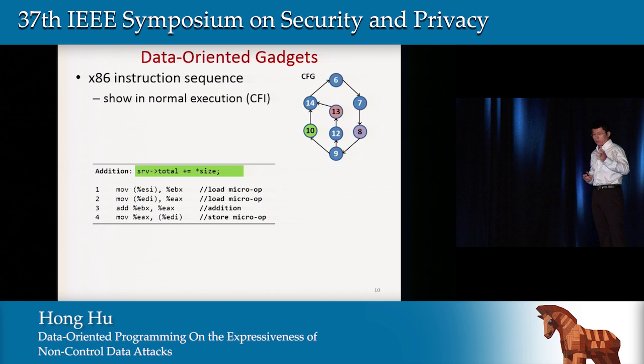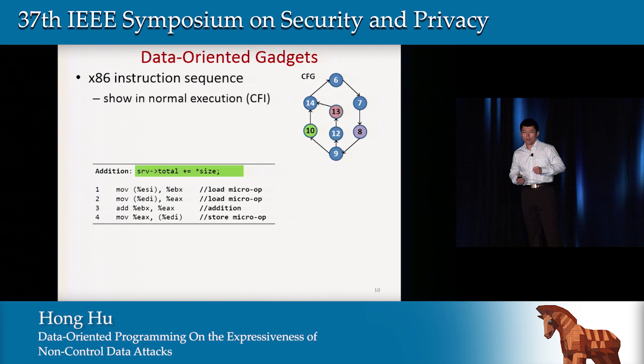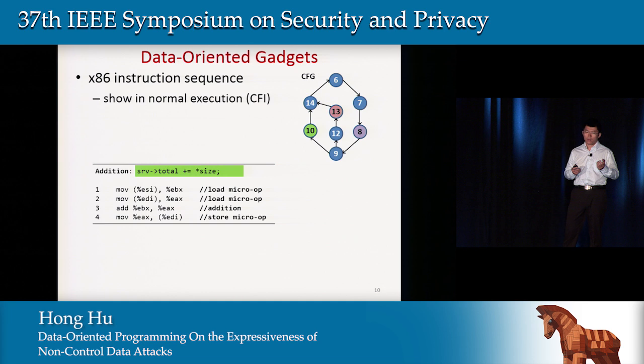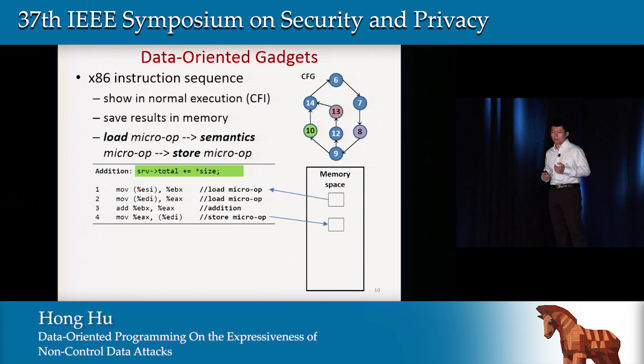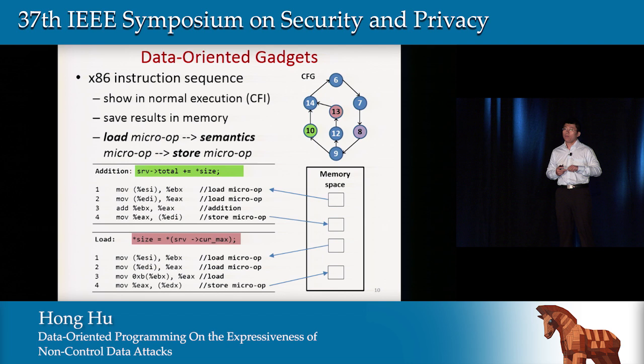For example, in the previous code we have an addition gadget at line 10 in the CFG. However, there are also other computations in between, and those unrelated operations may override the result. So gadgets must save their result in memory — they load operands from memory, perform the operation, and save the result back to memory. Similarly, we have a memory loading gadget in the previous code. To pass data between different gadgets, the memory write address of the previous gadget must match the memory read address of the following gadget.